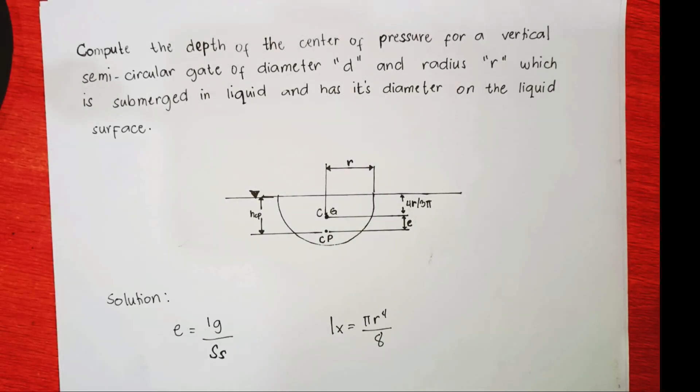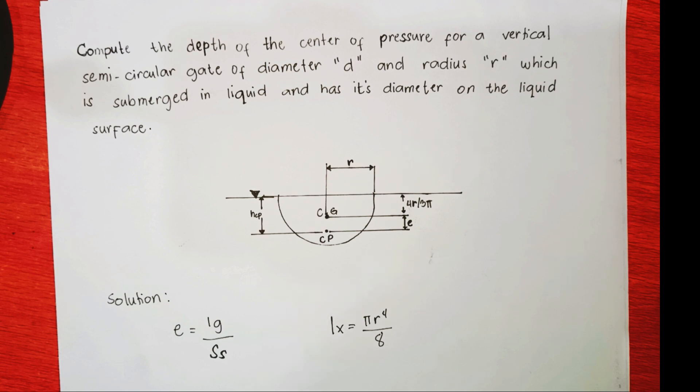Hello everyone. In this video we're going to solve problems in chapter 3 of fluid mechanics. The problem is: compute the depth of the center of pressure for a vertical semicircular gate of diameter d and radius r which is submerged in liquid and has its diameter on the liquid surface.